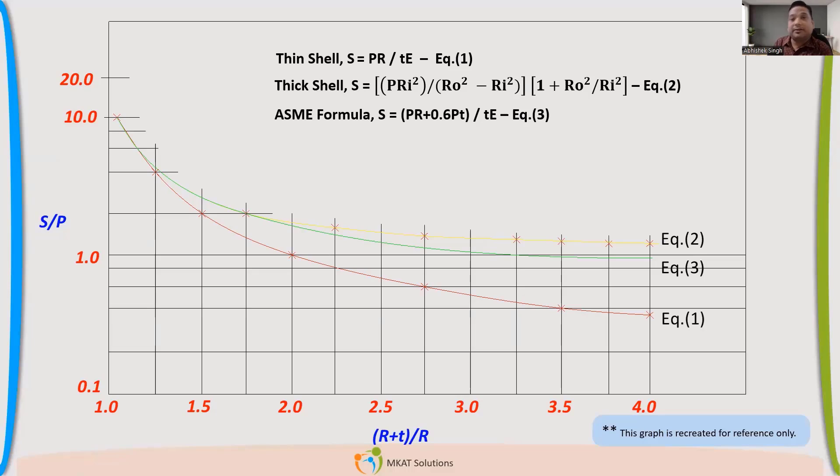It cannot predict for even all the T/R ratios. There is limitation which we will see when we'll refer the code. So you might have not identified, but code, before giving that formula, it has one statement. So now you got it, how this equation was derived by doing experiment and finding out the actual stresses which might be there in the pressure vessels and to predict those stresses accurately by using a simple formula.